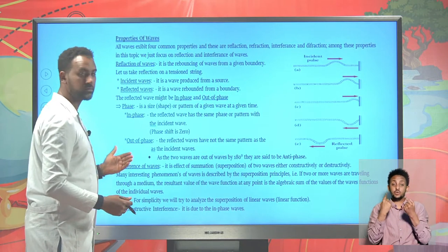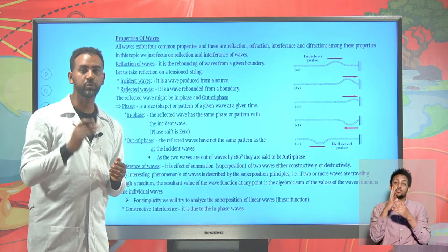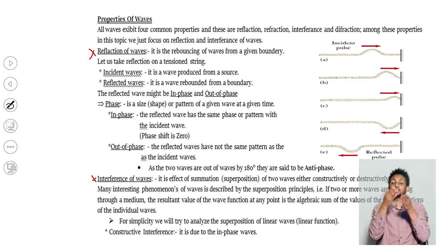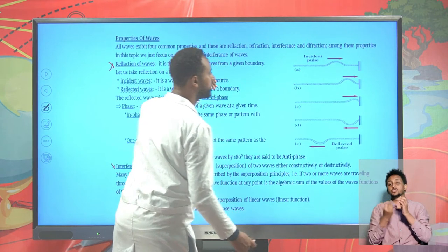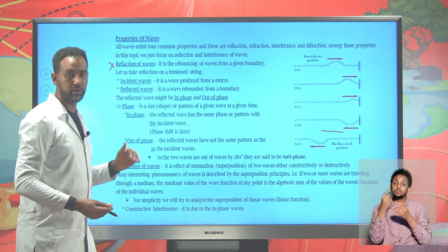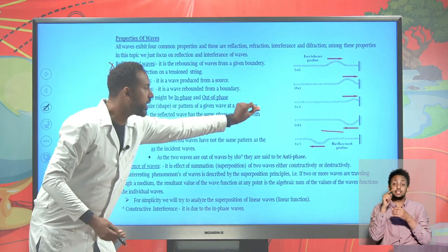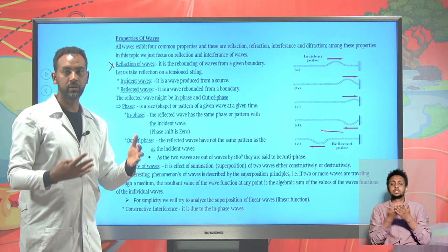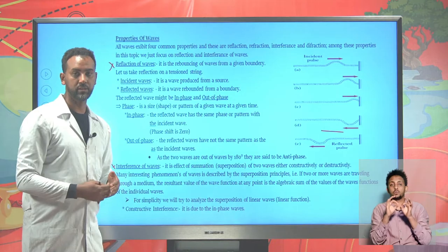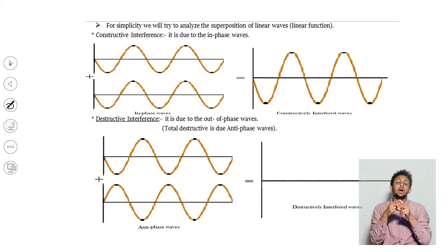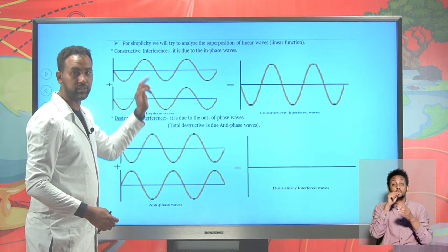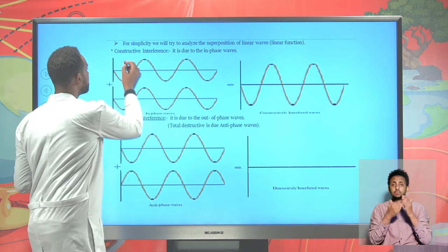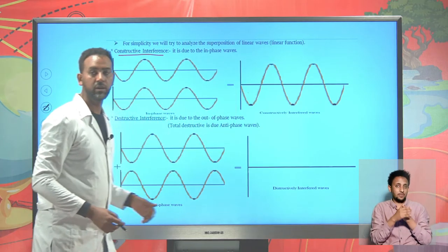Among the four properties, we mainly focus on reflection and interference. Reflection is the rebouncing of waves from a given boundary surface. The wave from a source is known as the incident wave, and the wave that bounces back from a boundary is known as the reflected wave. As these two waves merge together, they form an interference pattern. When two in-phase waves are summed together - meaning their corresponding points are at the same location at the same time - there is constructive interference.